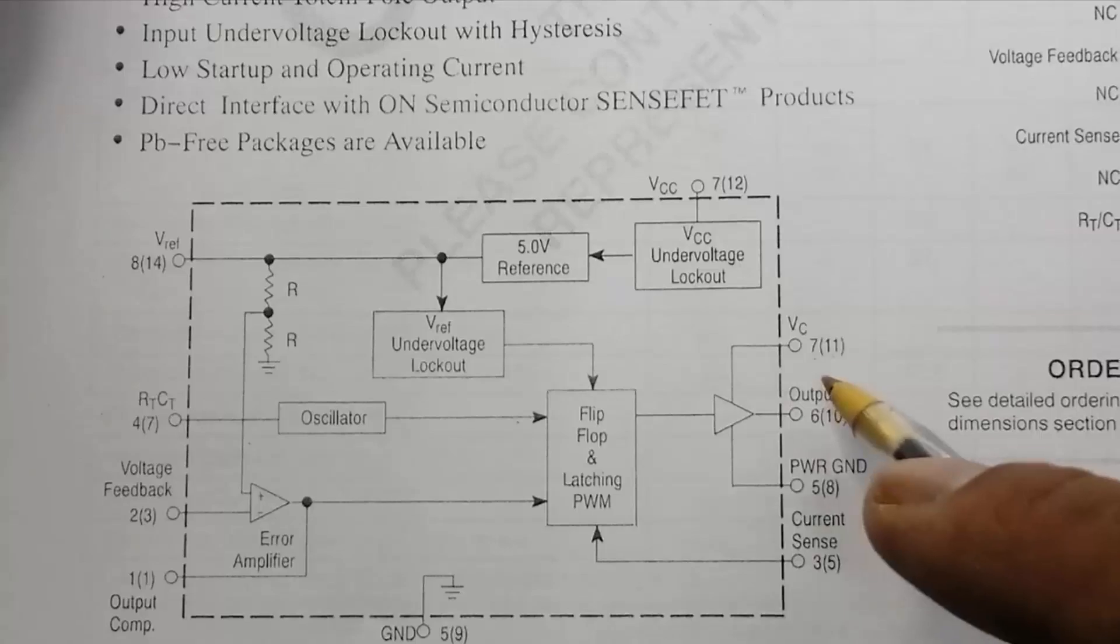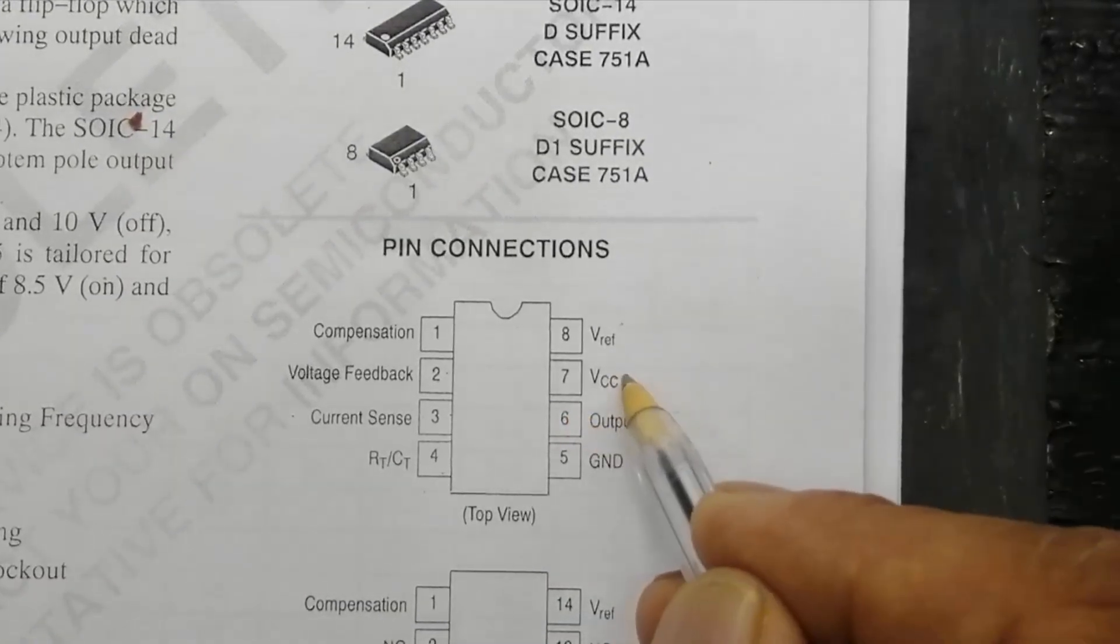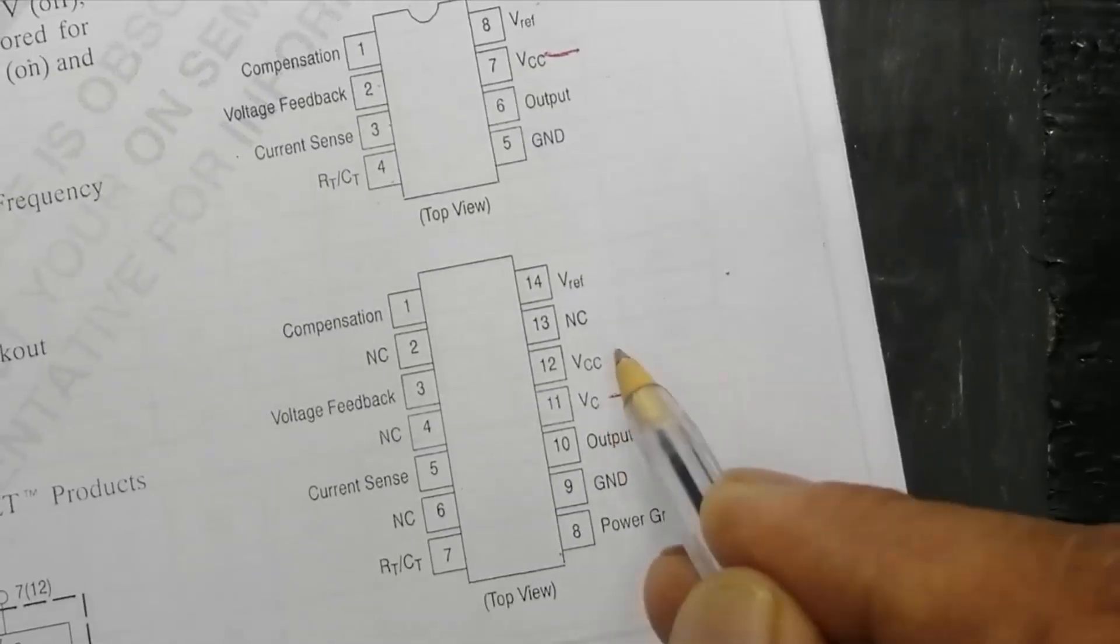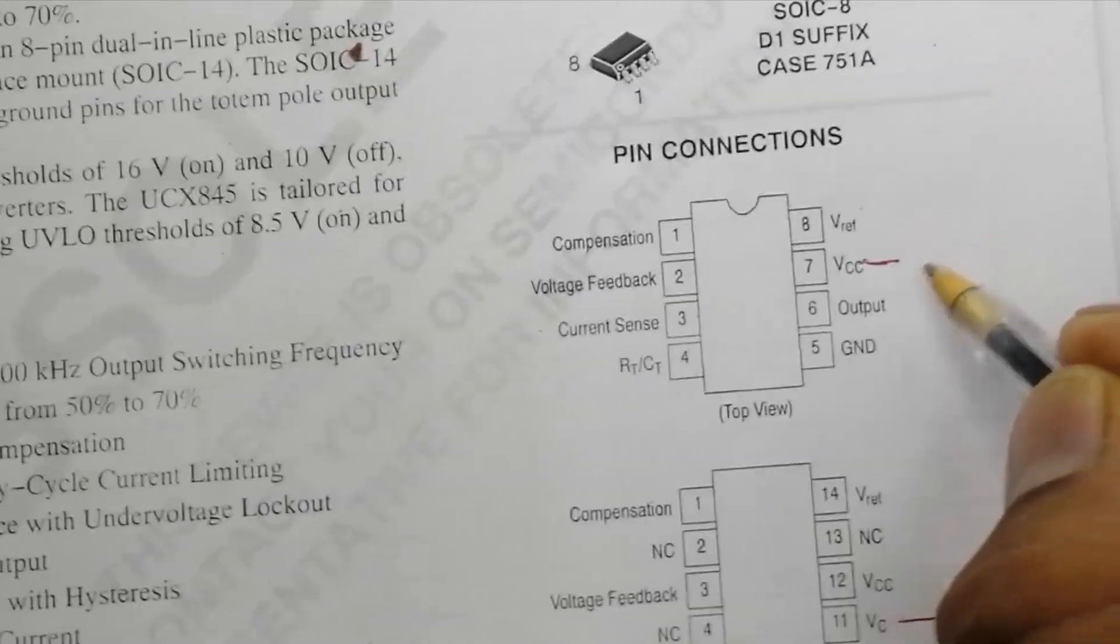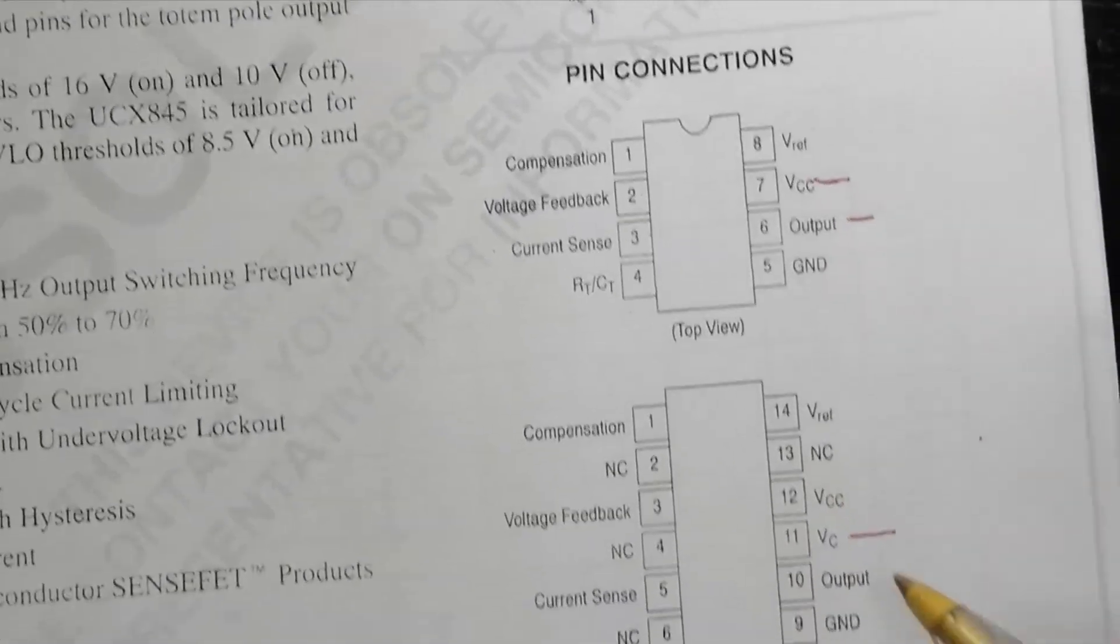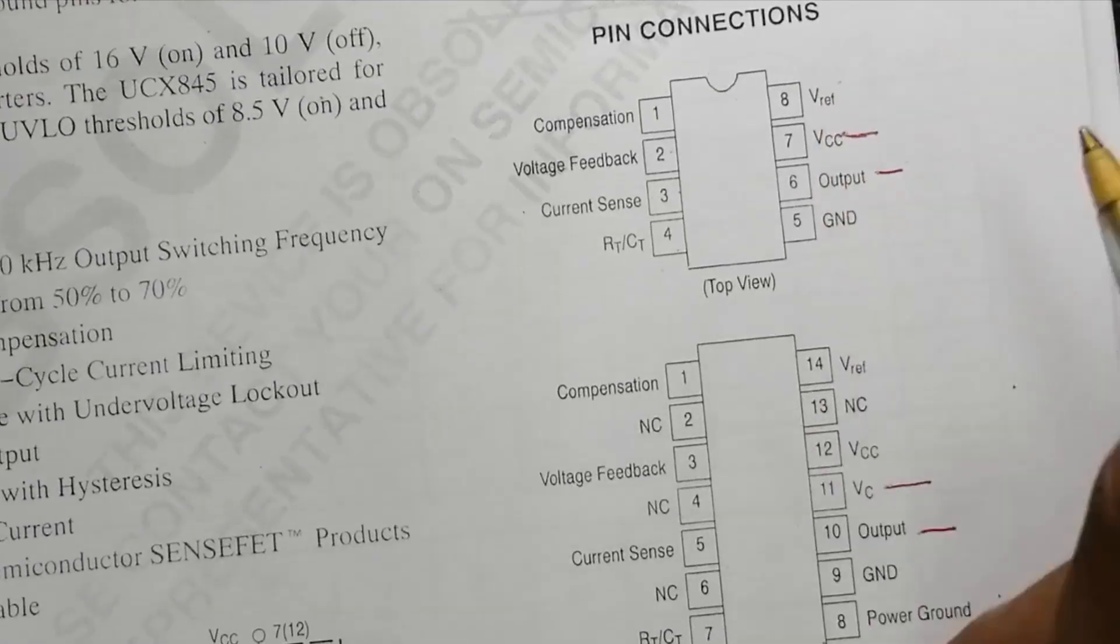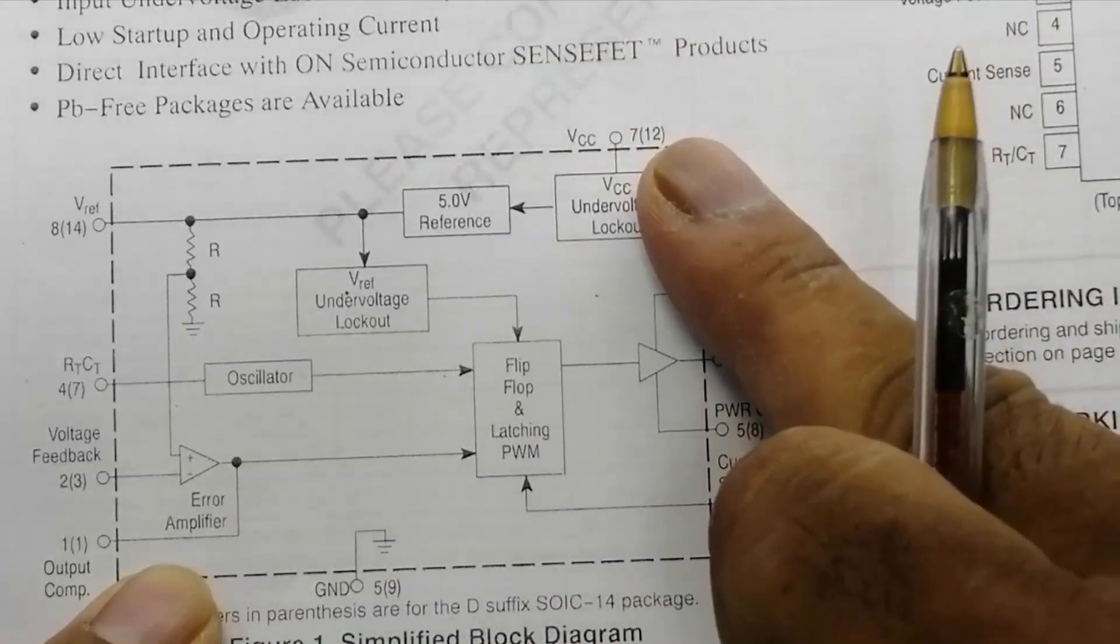If you see, VCC is here pin number 7 and 11. If we see here, VCC pin number 6, pin number 10 is output. So this IC is the replacement to each other, just only we have to select which package we are using: 8-pin or 14-pin.